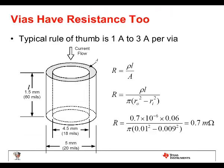Plugging in 2.8 mils for 2-ounce copper gives 0.26 milliohms per square, so that 1-inch trace with 10 squares is 2.6 milliohms. Vias have resistance too. For a 60 mil board, the via is 60 mils long and its resistance is 0.7 milliohms. A via can handle from 1 to 3 amps, so you need to understand your circuit's current requirements and place appropriate vias accordingly.